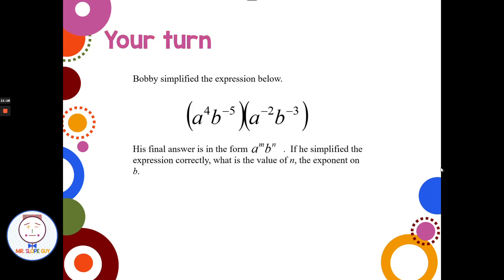One last, harder problem — Bobby simplified an expression and his final answer is in the form a to the m, b to the n. If he simplified correctly, what is the value of n, the exponent of b? Multiplying with the same base a: 4 plus negative 2 gives a squared, so m equals 2. For b: multiplying with the same base, add the exponents negative 5 and negative 3 to get negative 8. So the value of n is negative 8. I hope that helps with exponents negative and zero — have a great day!